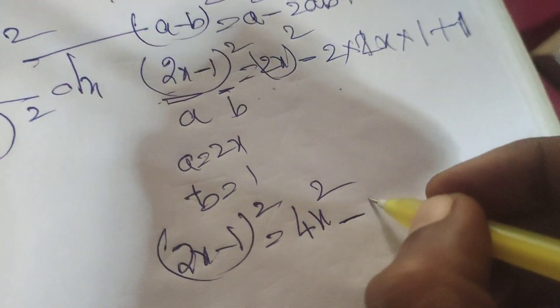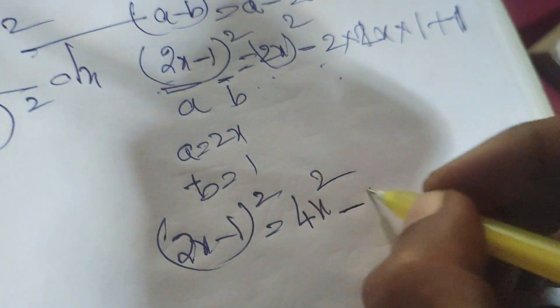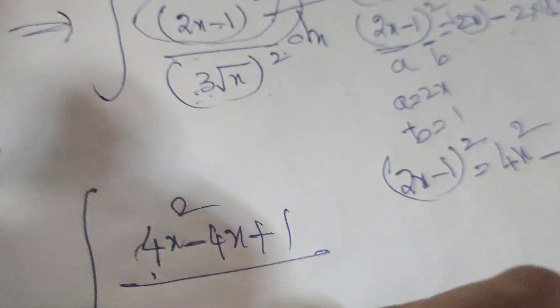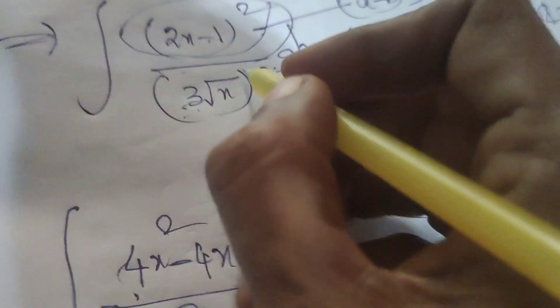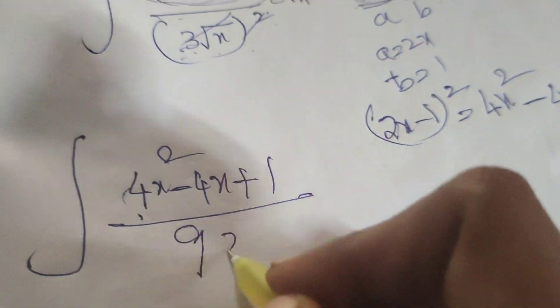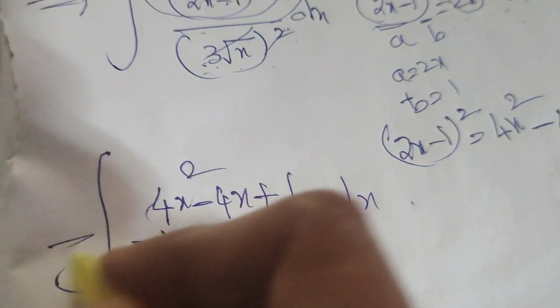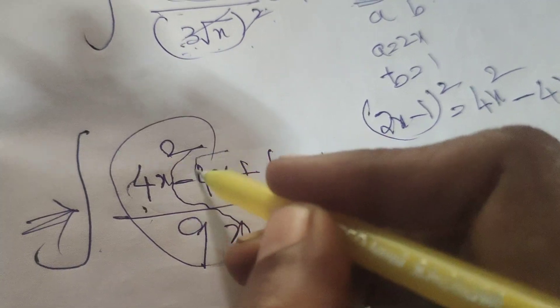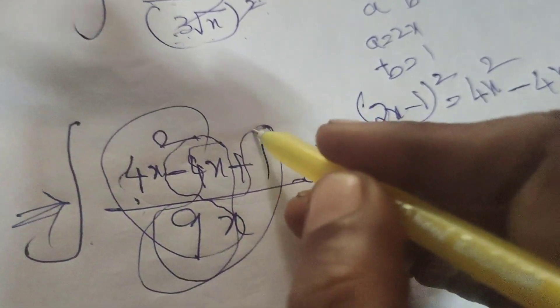So 2x minus 1 whole square equals 4x squared minus 4x plus 1. In place of (2x minus 1) whole square, write 4x squared minus 4x plus 1. The denominator is (3 root x) whole square, which is 9 times x (since square root gets cancelled), giving 9x. Now integrate this.